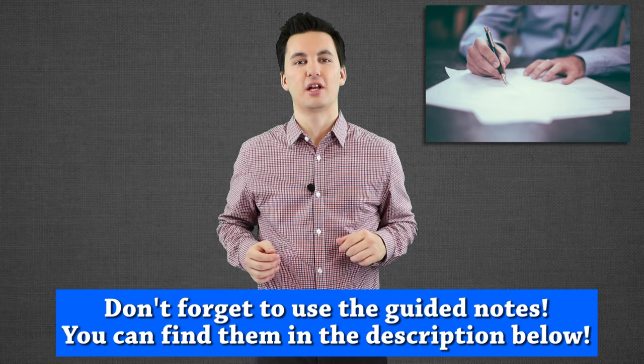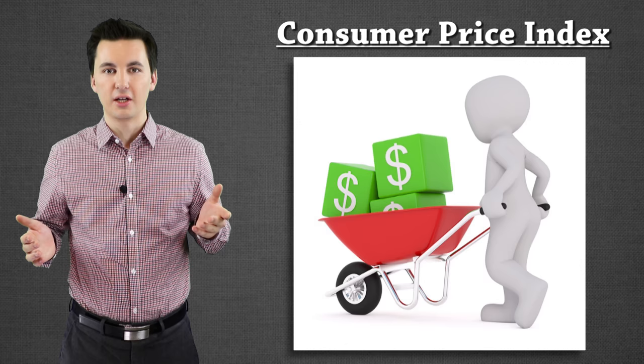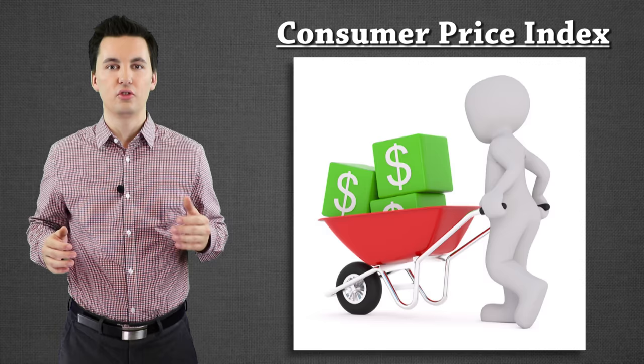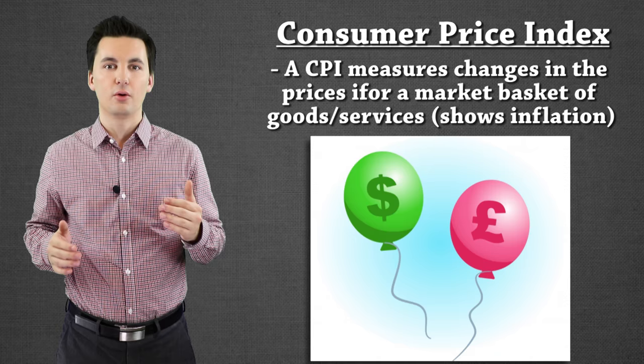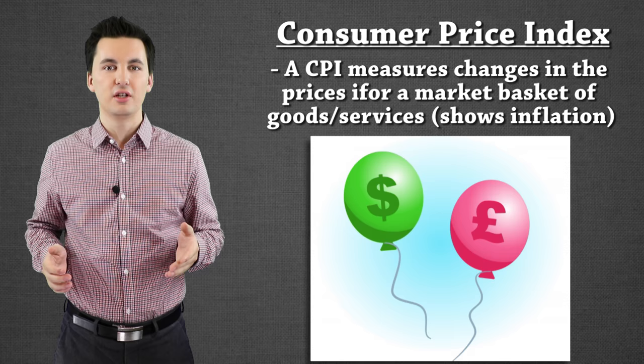Let's start talking about CPI, a consumer price index. We're going to cover this first and then we'll get into inflation. A consumer price index is used to see what's happening with inflation. We're going to have to have a base year for this. When we're looking at inflation we have to understand that the value of money changes over time, and when we have inflation that means our purchasing power is going down. A consumer price index is used to see what's going on with inflation with a certain basket of goods.